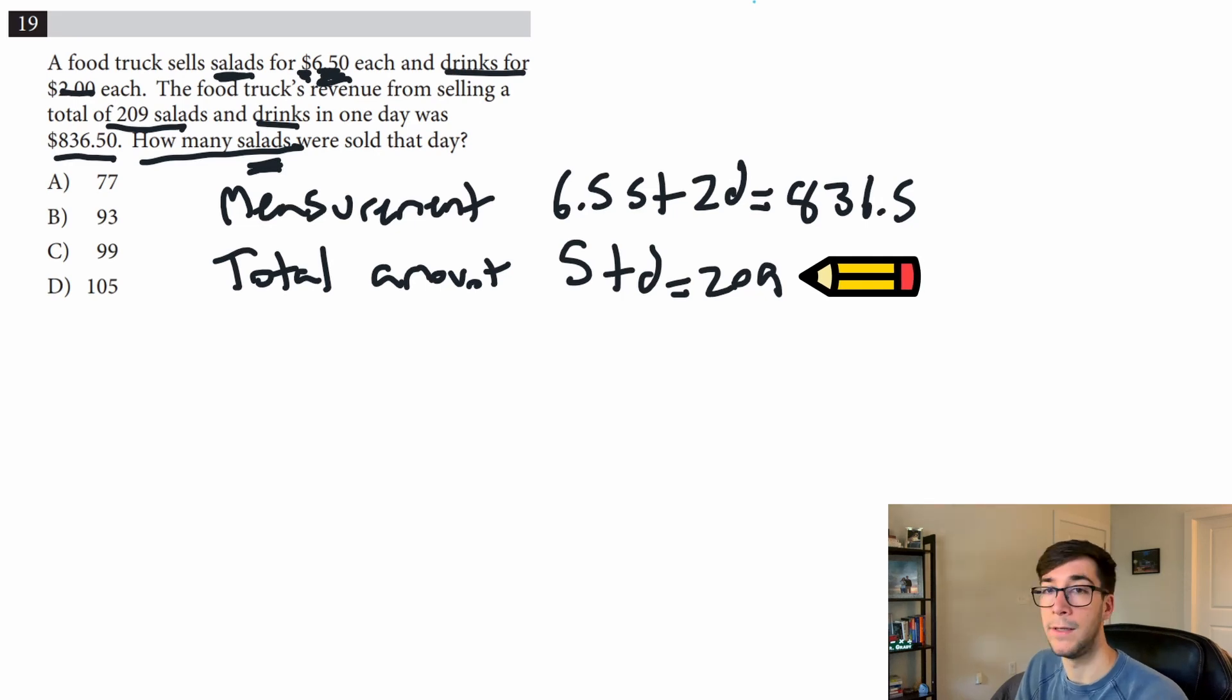I'm going to start by using this simpler equation and get rid of the d. We're going to do substitution, so we're going to say d = 209 - s. All I did was subtract the s from both sides, and now we can plug that d into this equation over here.